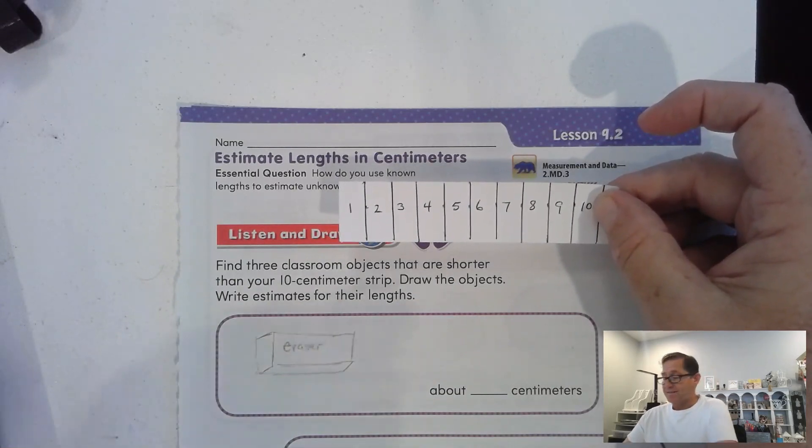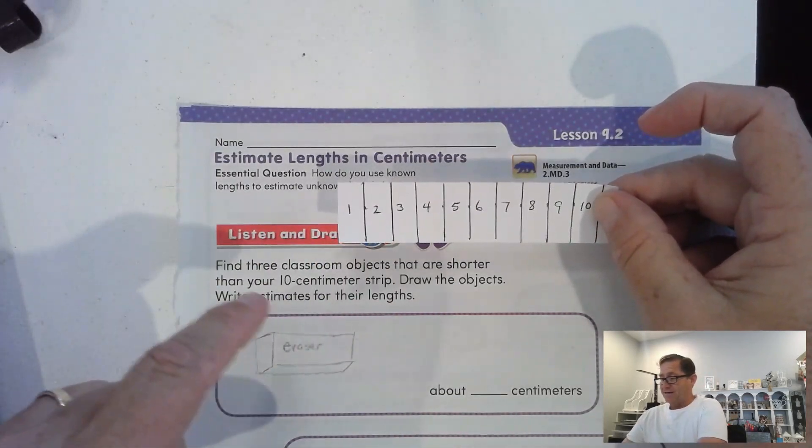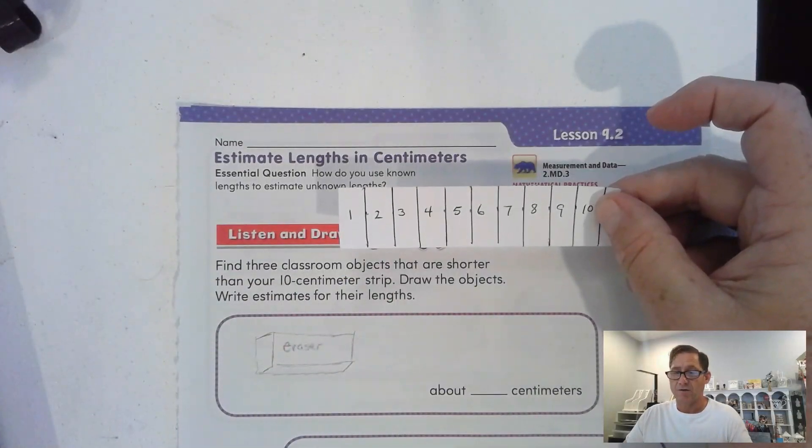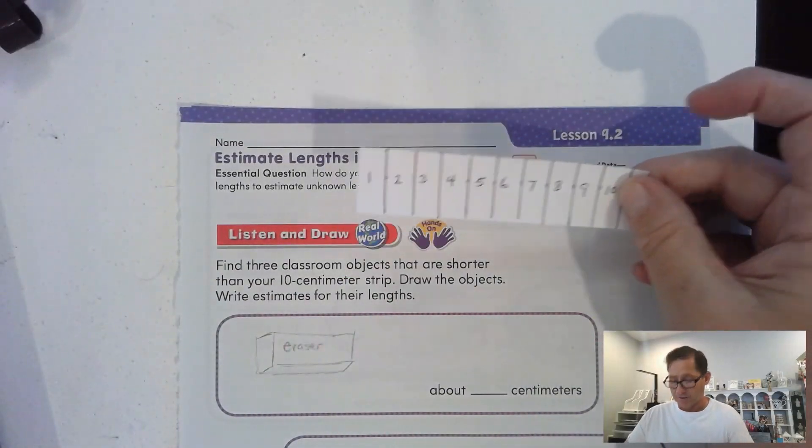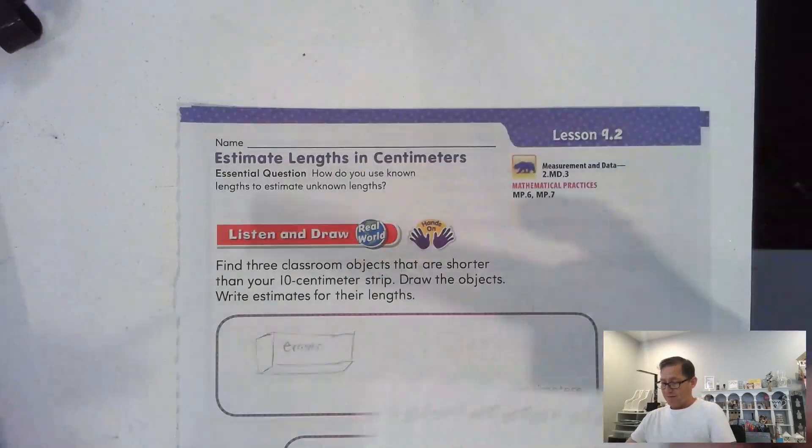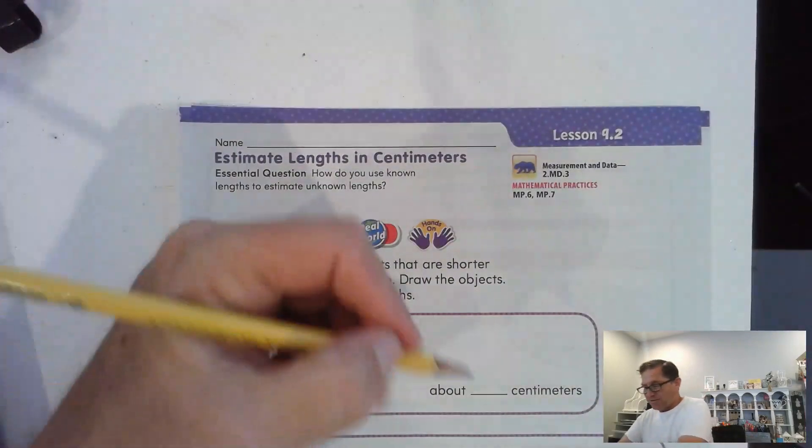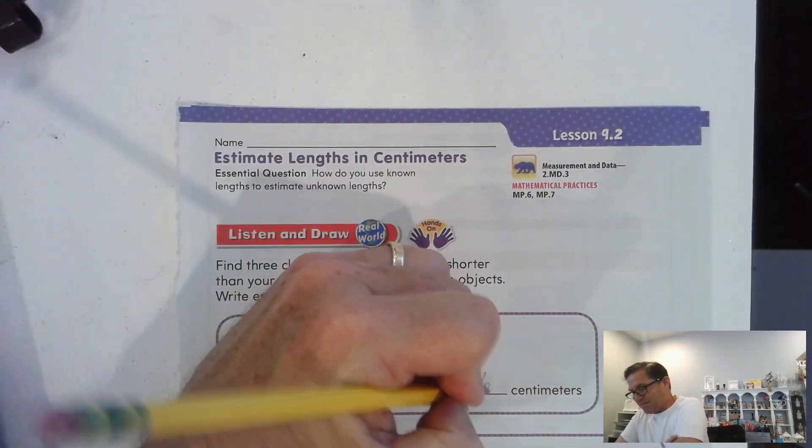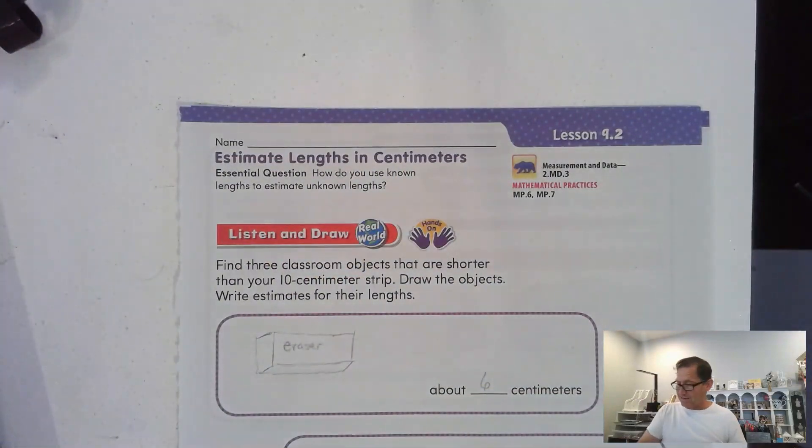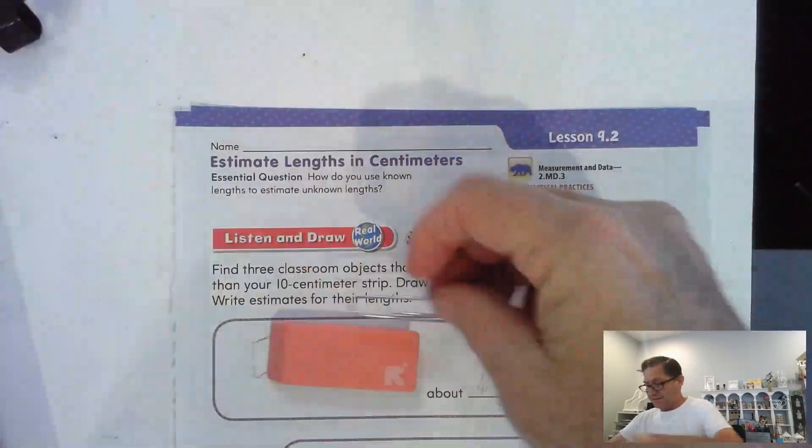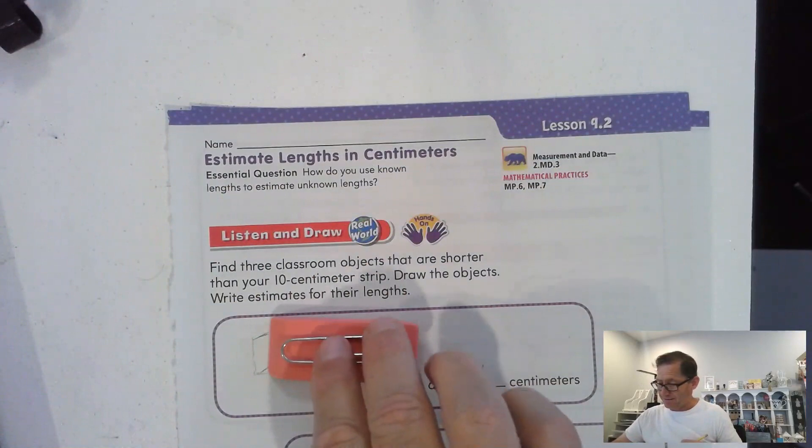So, for instance, if you found something and it almost was 10 centimeters long, we would call it 10 centimeters. On mine, I would say that these are about 6 centimeters, maybe. And actually, as I looked at my objects, they're kind of all about the same size, same length.